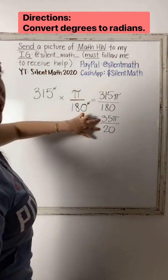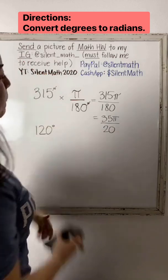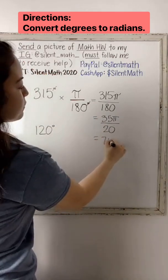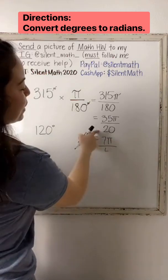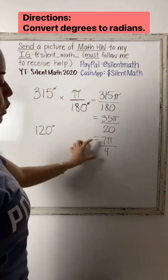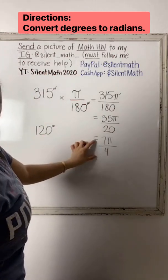These two answers we can still divide by 5. So if we divide by 5, 35 divided by 5 is 7 pi, 20 divided by 5 is 4. So 315 degrees is equivalent to 7 pi over 4.